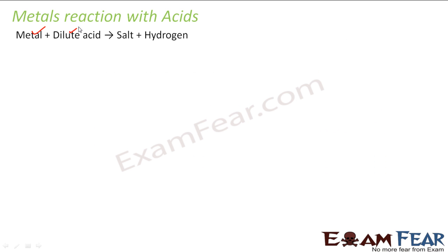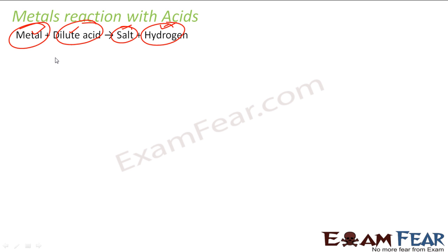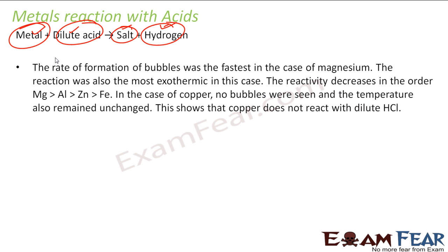Metal plus dilute acid will give you a salt and hydrogen gas. If you have a metal and you react it with a dilute acid, it will give you salt and hydrogen gas. This we have learned in the last chapter.